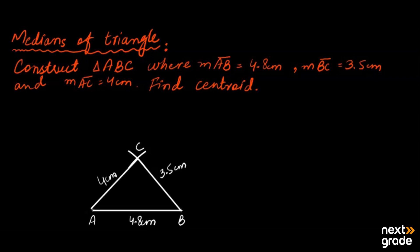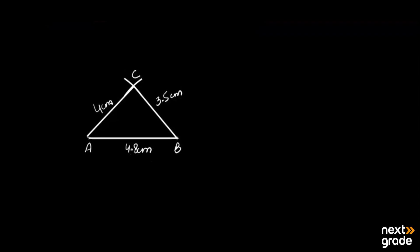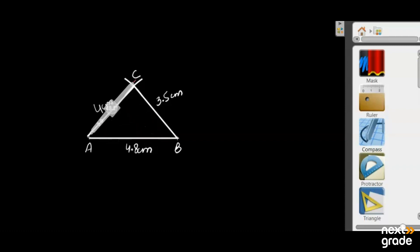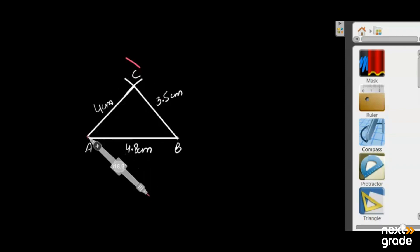Now we draw the medians. To draw the medians, we need to bisect the sides of the triangle. The best way to bisect the sides is to use the compass. We open the compass to more than half of the side length — for the side of 4.8 cm, we open it to more than four points. We make one arc from each end of the line.